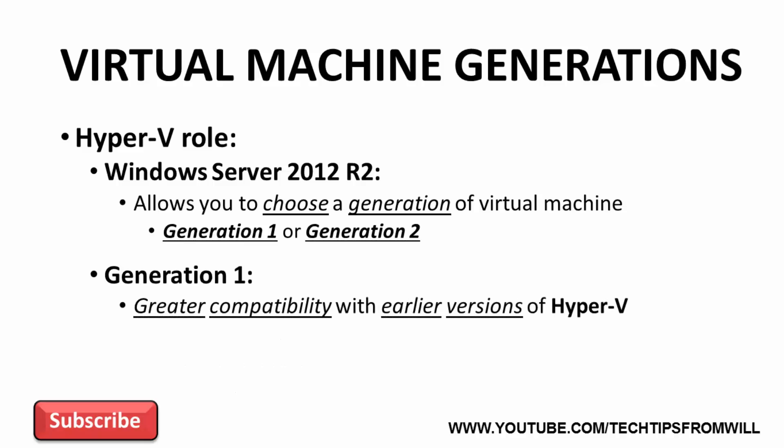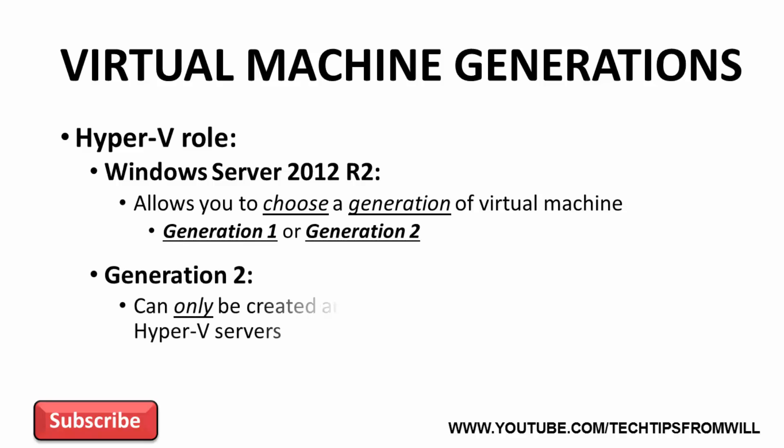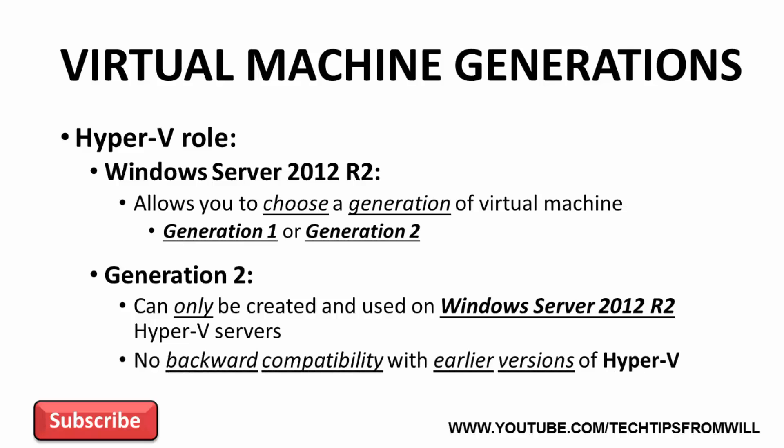Since Generation 1 virtual machines have been around for a while, they offer far greater compatibility with earlier versions of Hyper-V and Windows. Generation 2 virtual machines, on the other hand, are a new type of virtual machine that can only be created and used on Windows Server 2012 R2 Hyper-V servers. Because they are brand new, they offer no backward compatibility with earlier releases of Hyper-V. Microsoft has done this on purpose to ensure that Generation 2 virtual machines are essentially future-proofed.